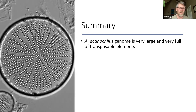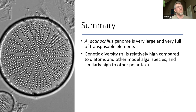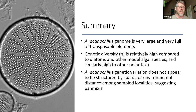In summary, we found that Actinocyclis actinochilus has a very large genome full of repetitive transposable elements. Genetic diversity in this diatom is relatively high compared to other diatoms where that measure has been assessed previously, and also compared to other model algal species. This diversity is similar to other polar taxa. And this genetic variation does not appear to be spatially or environmentally structured among sampled localities, suggesting possibly some panmixia is at play.